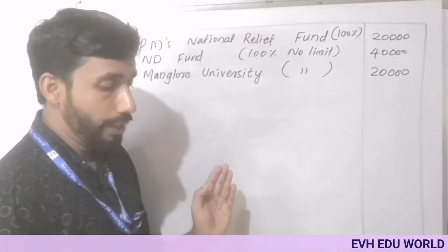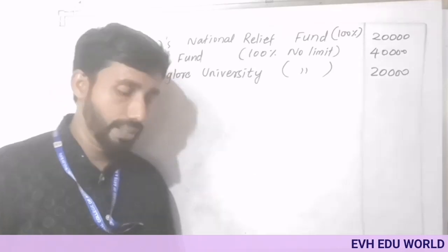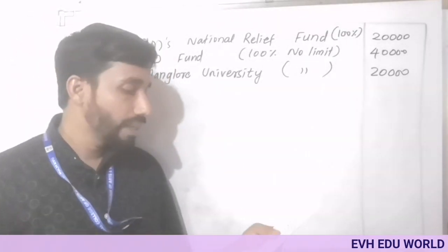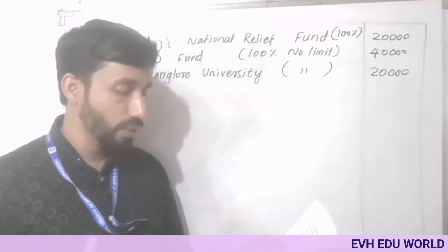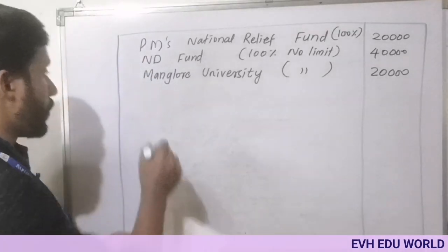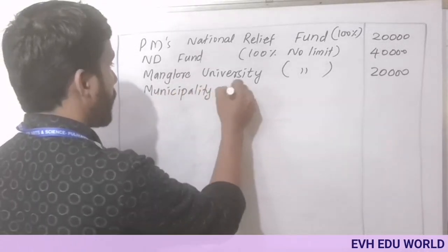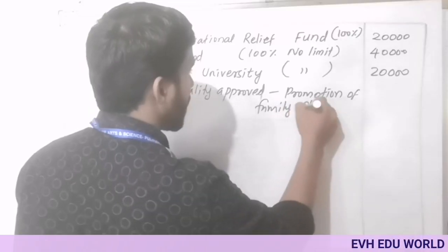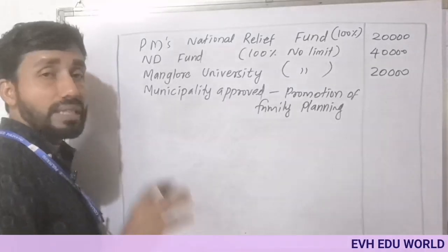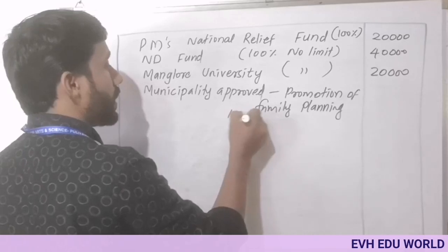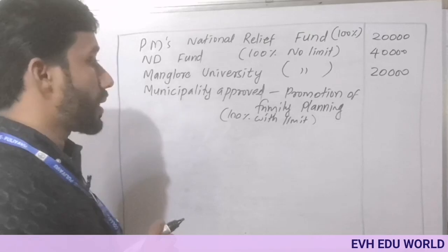Next, 82 poor students 4,000 and books donated to an approved college 12,000 — these two are 50% qualifying amount items. Approved Charitable Institution 60,000 and Municipality Approved for Promotion of Family Planning 20,000. The municipality item is 100% of the qualifying amount — 100% deduction applied to the qualifying amount.